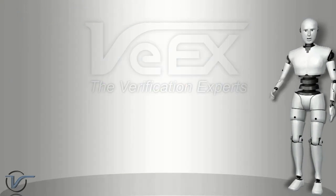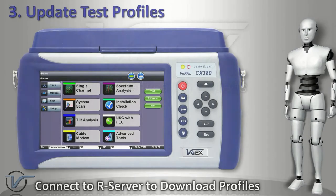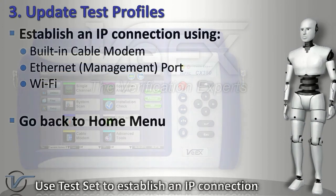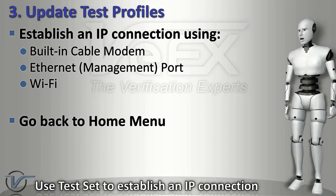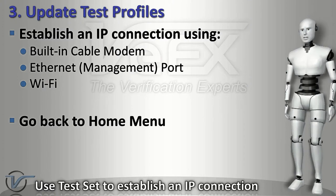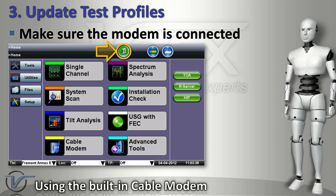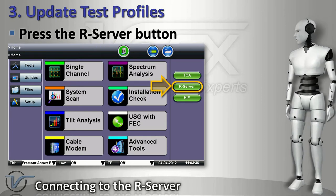Now that your meter is running the latest software version, it is time to update its test profiles. For this, you will need to connect to the R server. First, establish an IP connection using your choice of built-in cable modem, Ethernet port, or Wi-Fi. Then go back to the main menu. If you are using the built-in cable modem, make sure the modem icon is green. Press the R server button.